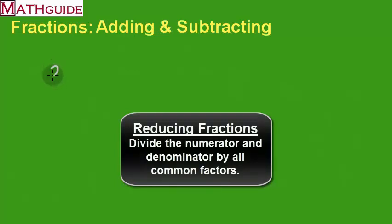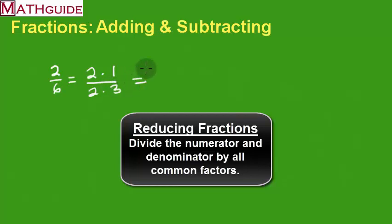In my last video, we were talking about how to reduce fractions. For instance, let's say if we had 2 sixths. This is the same thing as 2 times 1 over 2 times 3. If you are dealing with a problem like this and there's a common factor — you could see that both numbers are even — basically what I'm doing is dividing the top by 2 and the bottom by 2. And that's why my answer is 1 third.